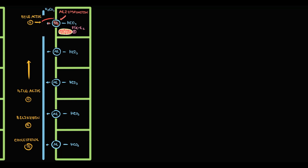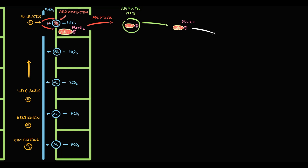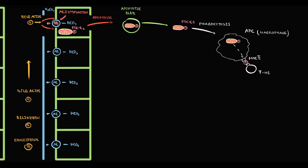Without bicarbonate, biliary epithelial cells are left defenseless against bile acids, and constant damage by bile acids provokes apoptosis of biliary epithelial cells. With apoptosis, intrahepatic biliary cells form so-called apoptotic blebs, and inside one of these apoptotic blebs are located mitochondria. The apoptotic blebs then undergo phagocytosis by macrophages, which present parts of the apoptotic blebs on MHC2 receptors to T-helpers.